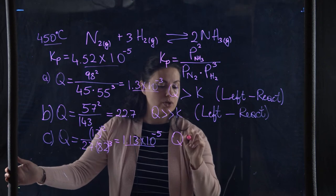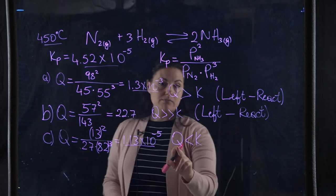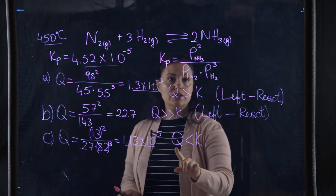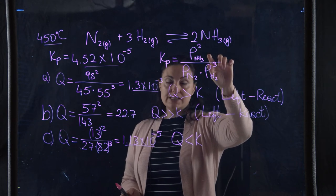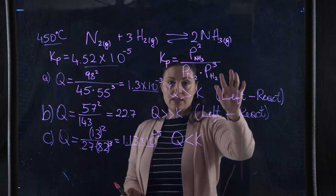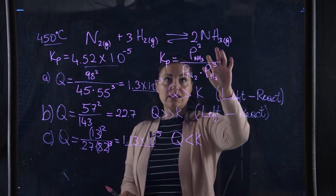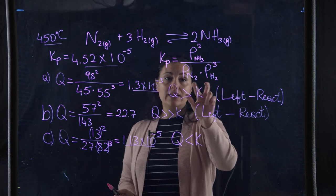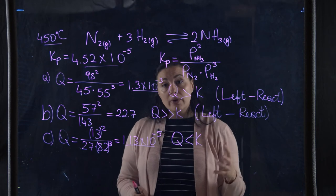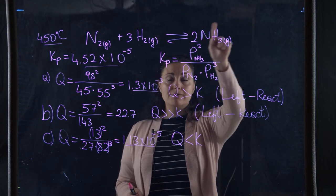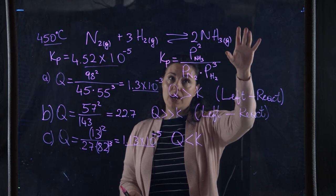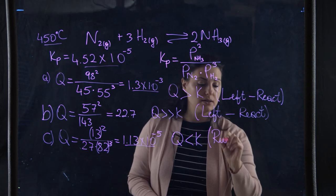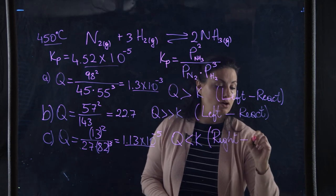Q = 1.13×10⁻⁵ is smaller than K = 4.52×10⁻⁵, by about three times. Since Q is less than K, I need to increase Q to reach equilibrium. I increase Q by increasing the numerator and decreasing the denominator — making more NH₃ and consuming N₂ and H₂. Therefore, the reaction proceeds forward, to the right, making more product.